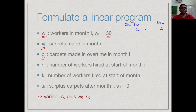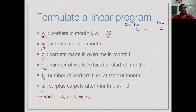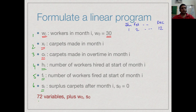The overtime cost is over and above the salary already paid. Let hi be the number of workers hired at the beginning of month i, and fi be the number fired. Let si be the number of surplus carpets in stock at the end of month i, with s0 equal to 0 (empty warehouse initially). So we have 6 quantities for each of 12 months — 72 variables plus the initial values w0 and s0, giving 74 variables total.